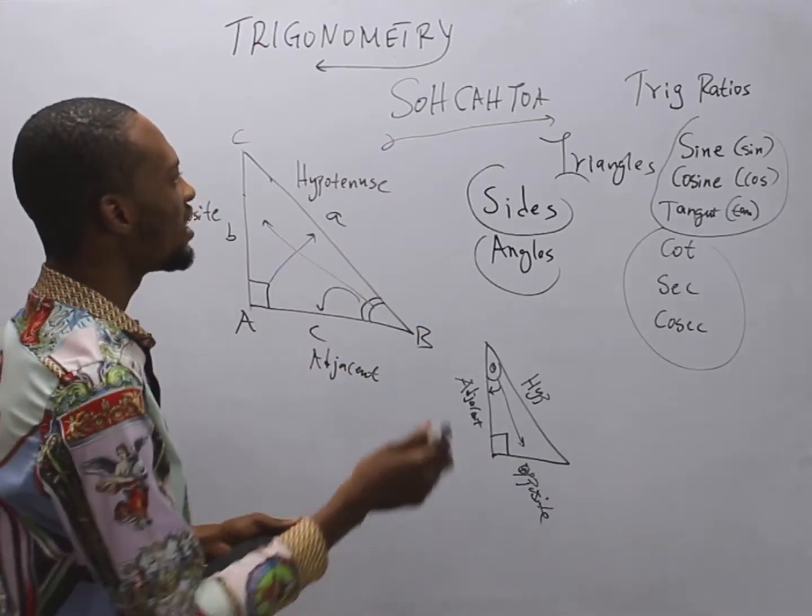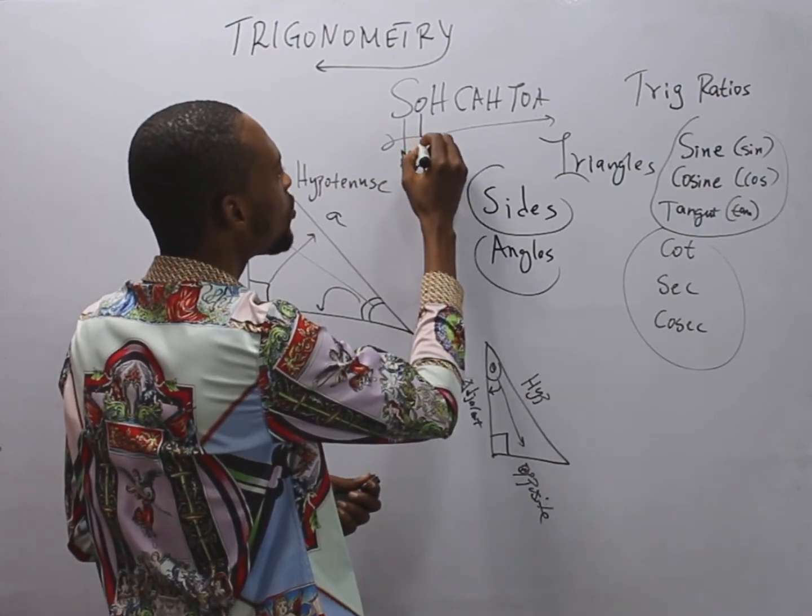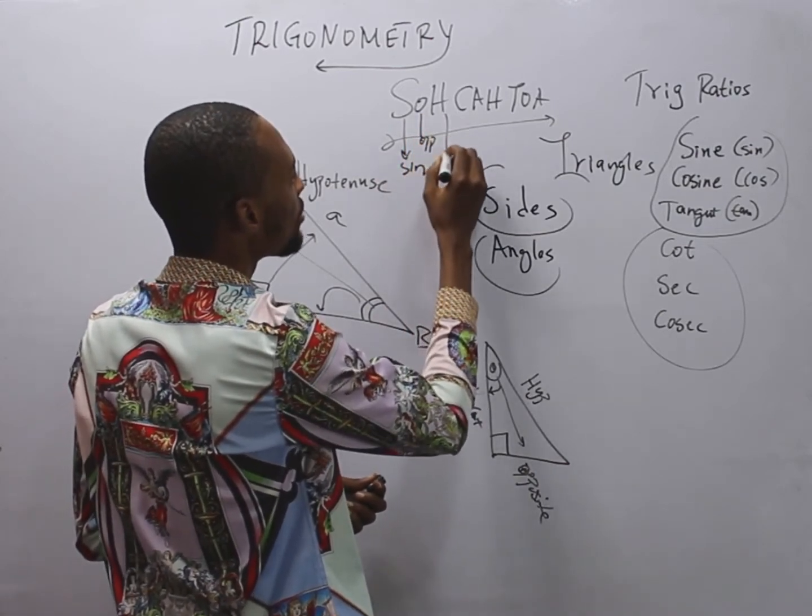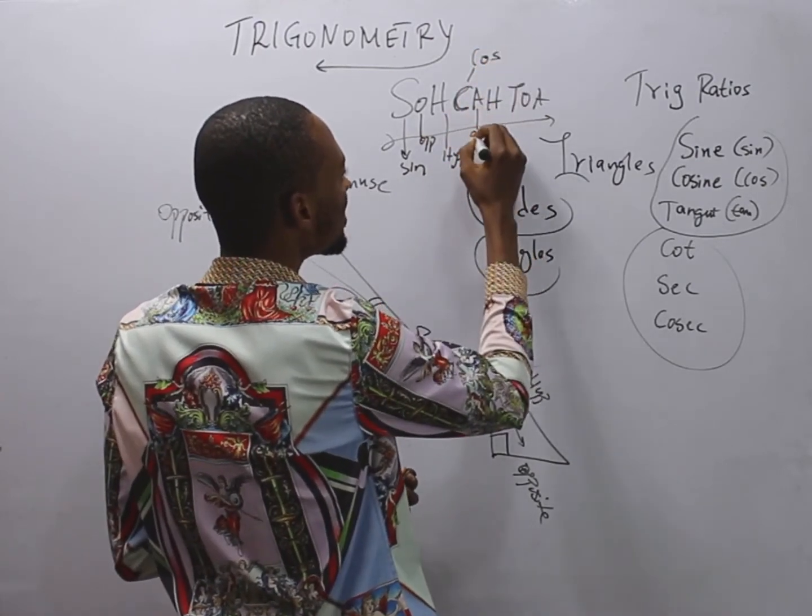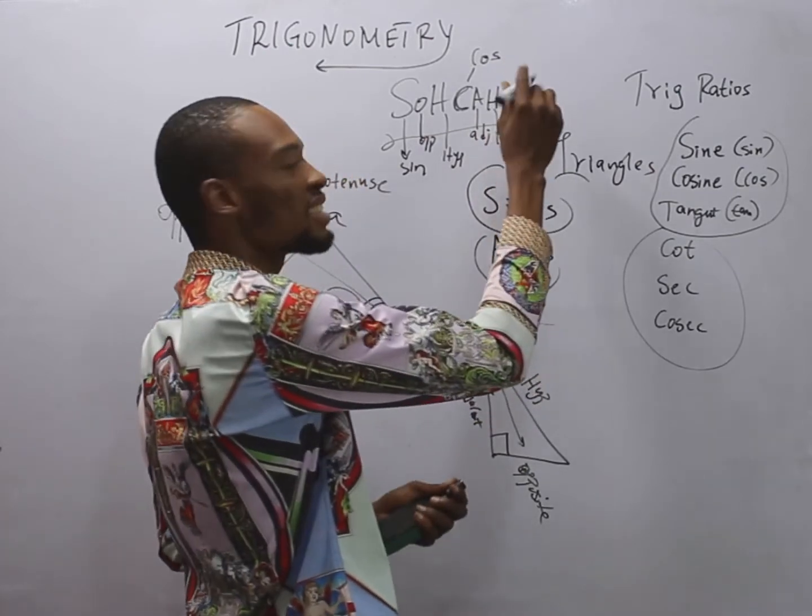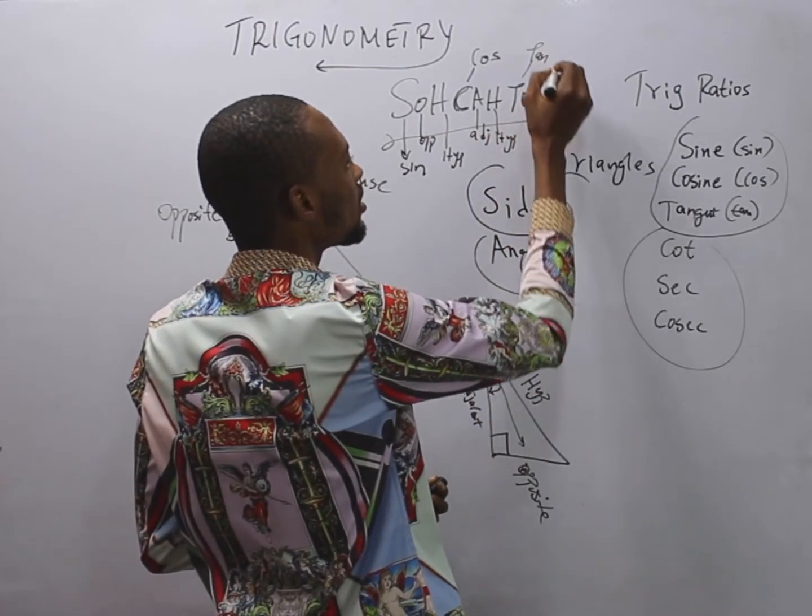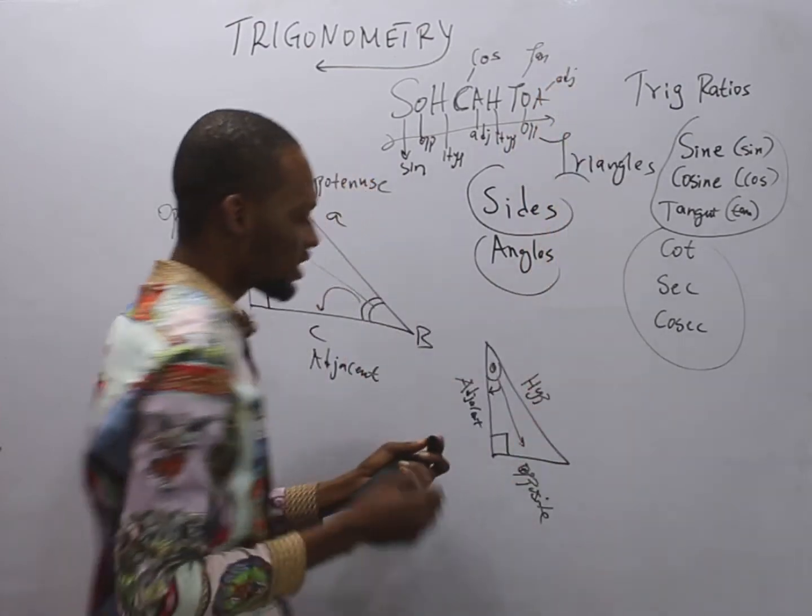Now that we have this, from SOHCAHTOA, S here represents sine. O is opposite. H is hypotenuse. Then this C, here is cos. A is adjacent. And H is hypotenuse. This T represents tan. So this is tan. O is opposite. And A is adjacent.